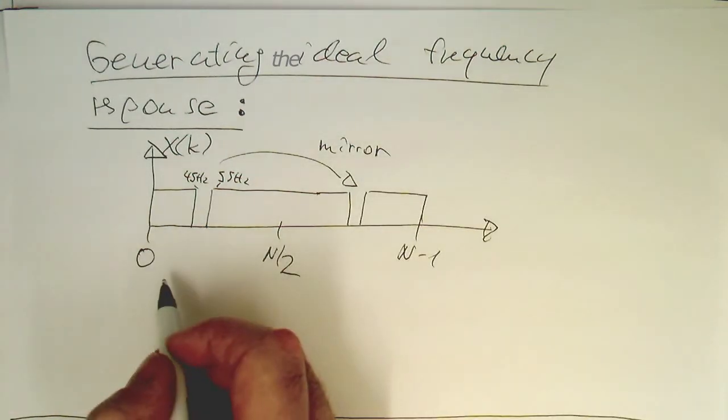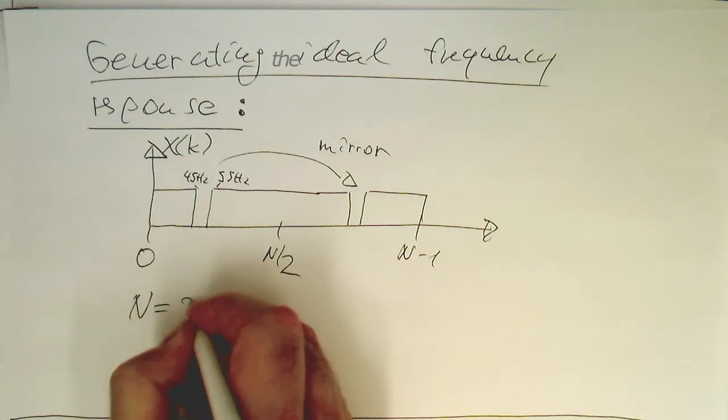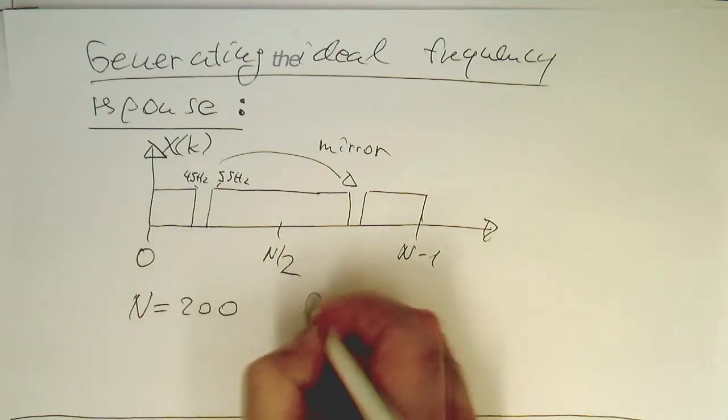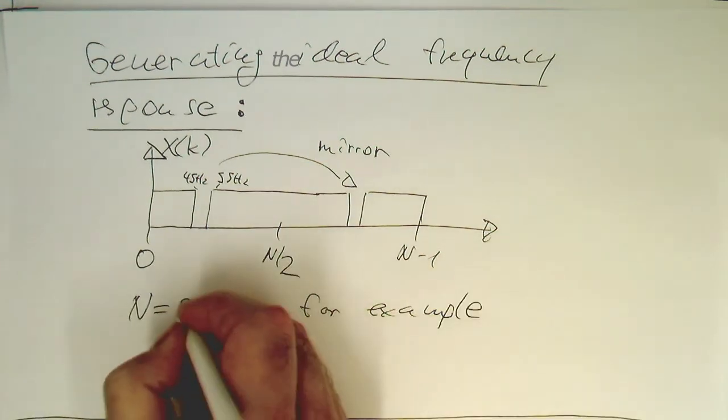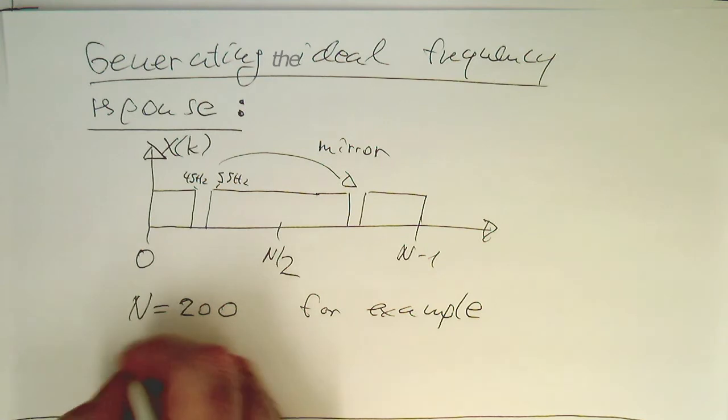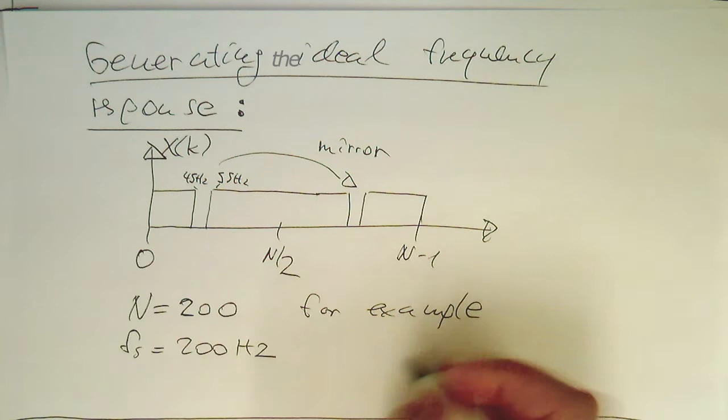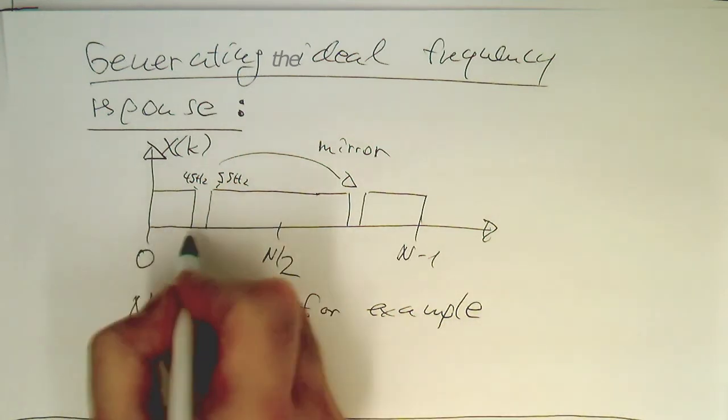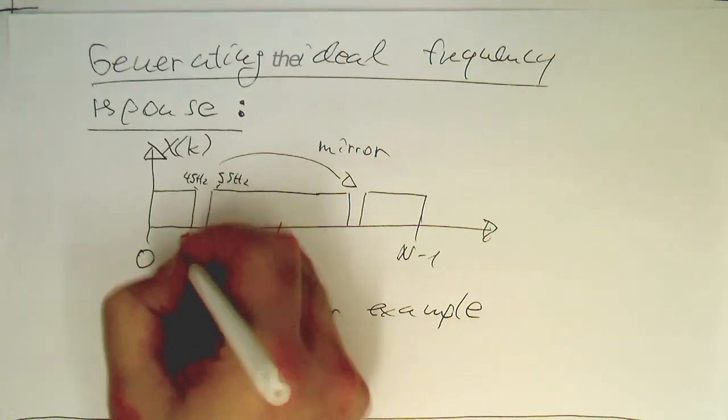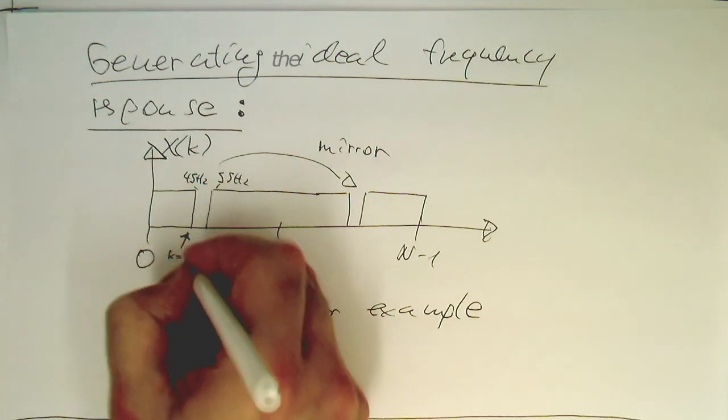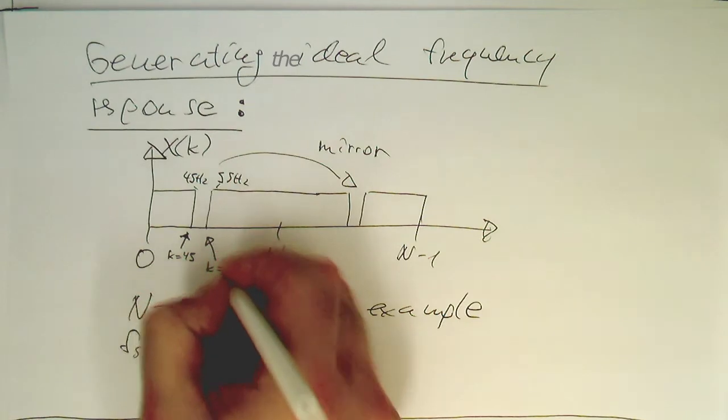So which numbers can we choose here? So let's make it very, very easy. So let's say we set n equals 200, for example. Now this makes it a very easy mathematical exercise because our FS is 200 Hz. So this means one step here is just 1 Hz. So then this number here corresponds to k equals 45.